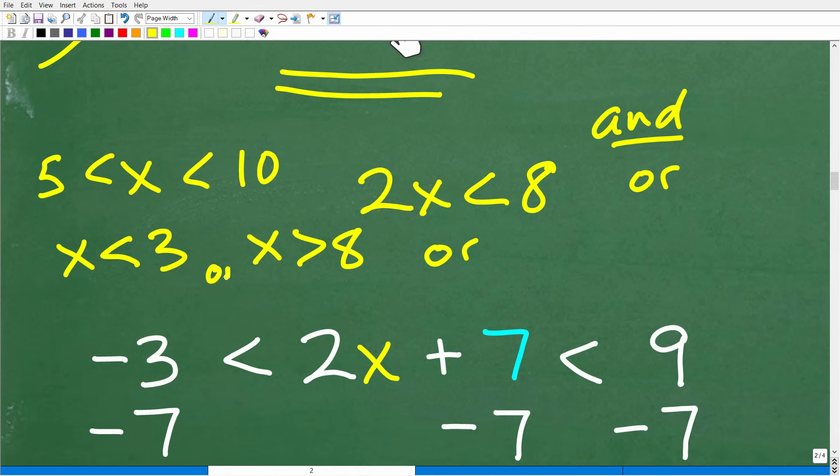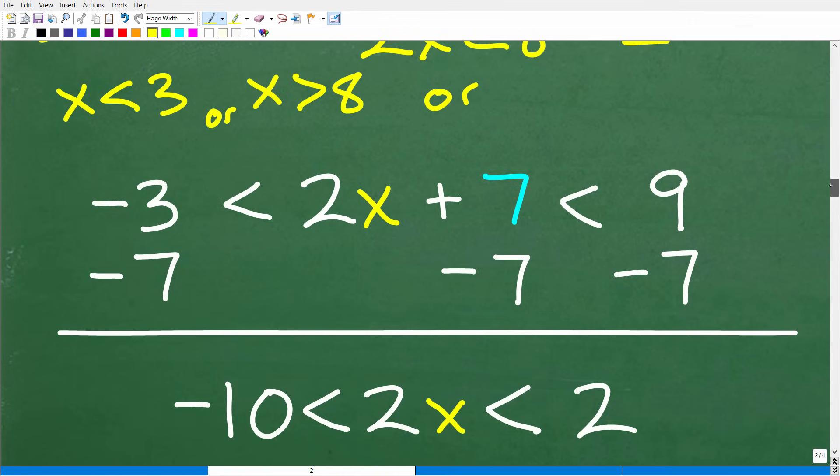Maybe we have some sort of situation where this would be a representation of the solution. This is an or situation - x is less than 3 or x is greater than 8. So we're dealing with and and or statements. In mathematics and inequality, these are called compound inequalities.